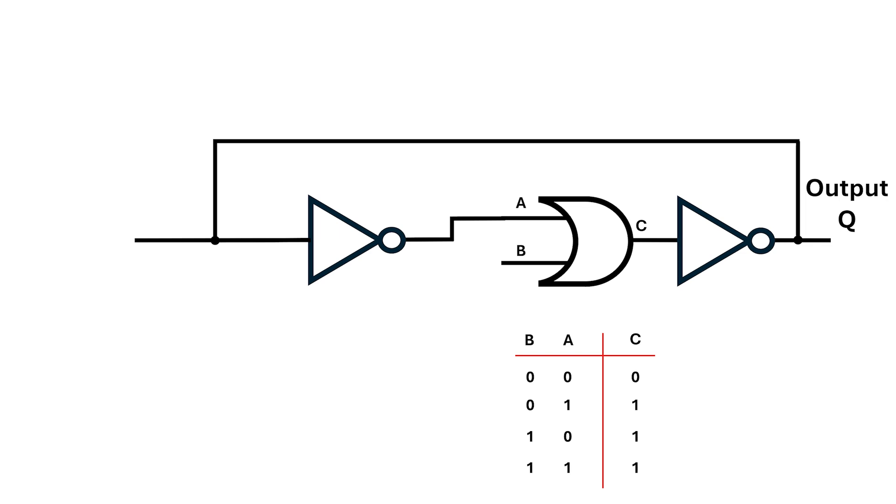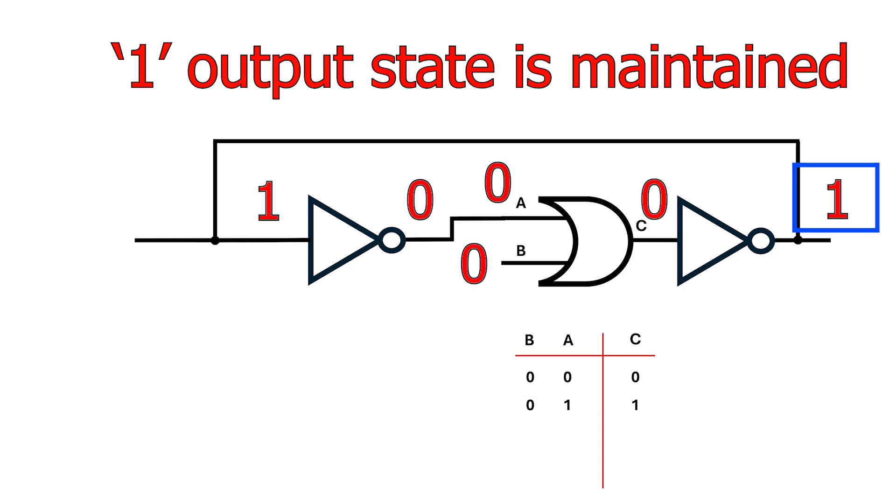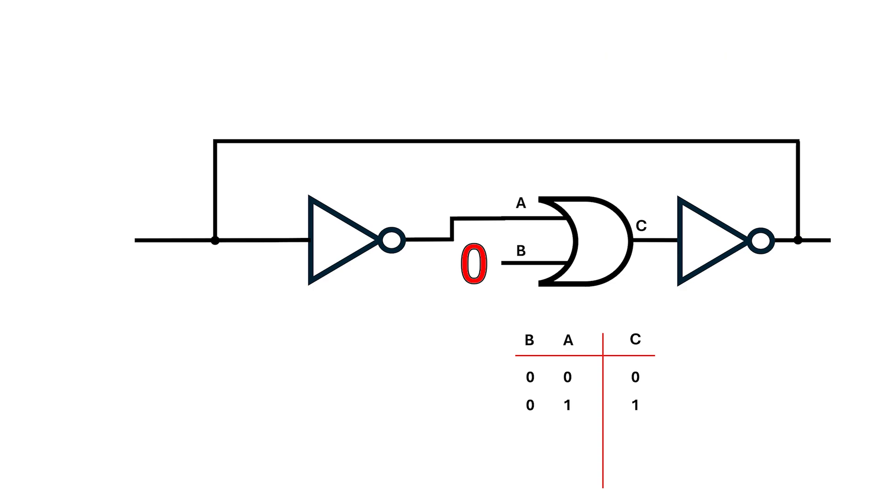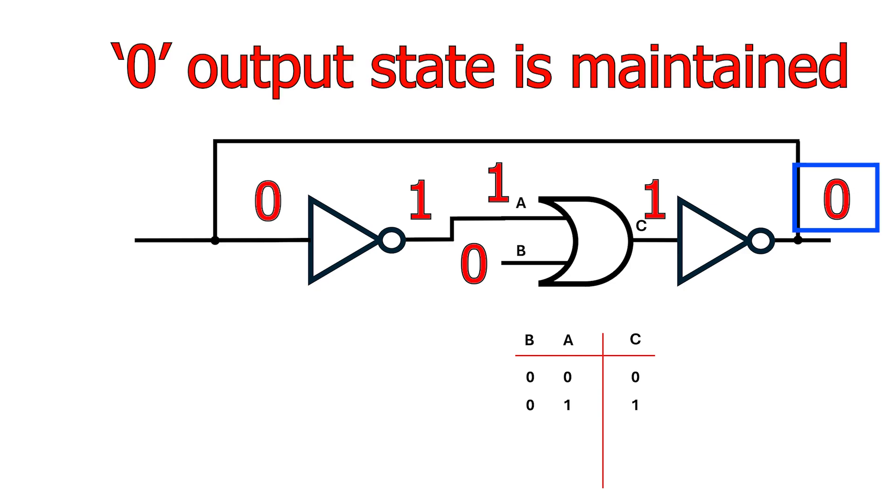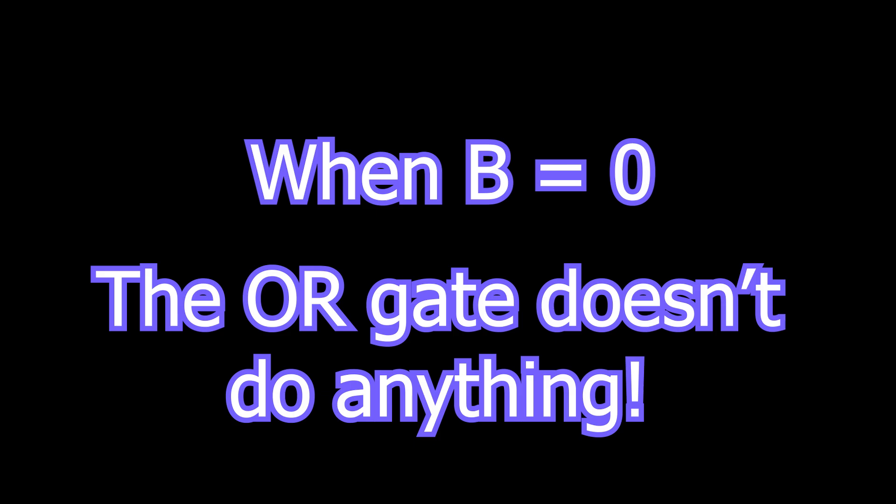Let's start with the B input of the OR gate set to zero. If we have an output of Q equals one, this feeds back to the left inverter, so its output will be zero. We have a zero and a zero going into the OR gate which gives us an output of zero. This feeds back to the right inverter which outputs a one and maintains the state. Similarly, when Q is zero, this works its way through the circuit and we present one and zero to the OR gate. Its output is one, this goes to the inverter on the right, it outputs a zero and maintains the state. So basically when B is set to zero it doesn't actually do anything.